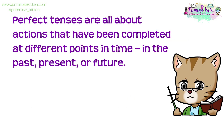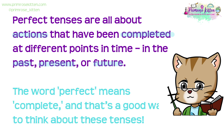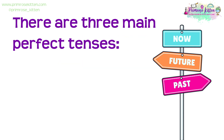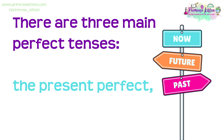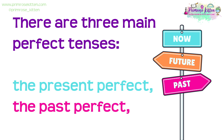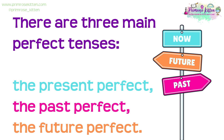Perfect tenses are all about actions that have been completed at different points in time — in the past, present or future. The word 'perfect' means complete, and that's a good way to think about these tenses. There are three main perfect tenses: the present perfect, the past perfect, and the future perfect. Let's break them down one by one.